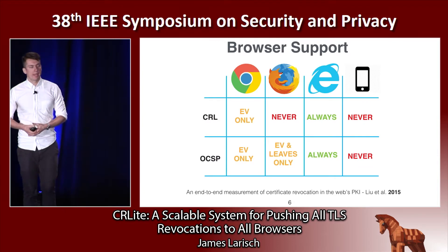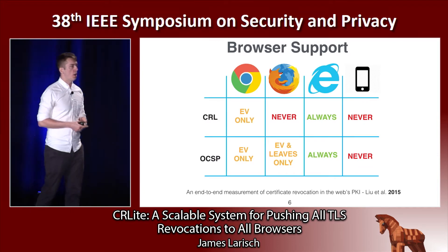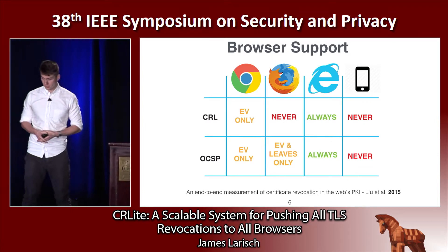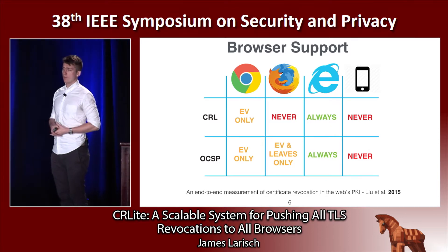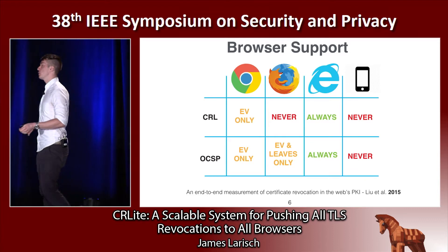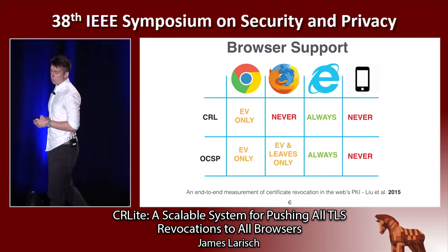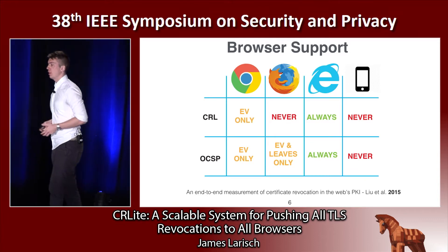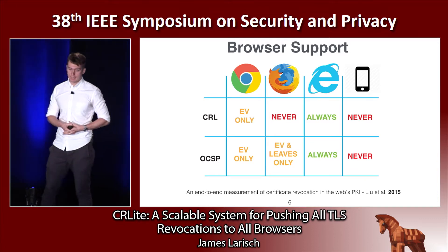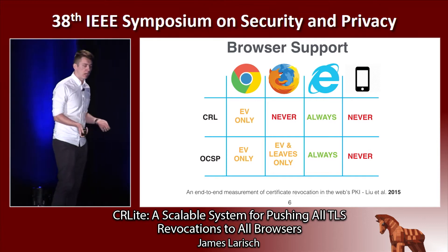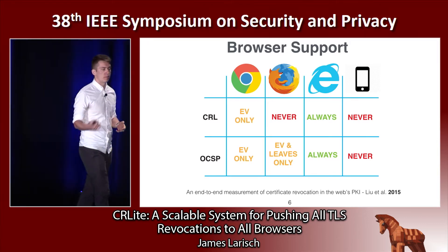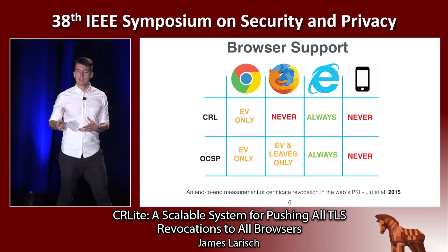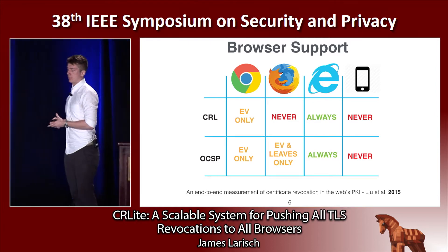The current revocation mechanisms are unpopular and inferior. Browsers especially don't like these revocation mechanisms. As of 2015, Internet Explorer was the only browser to implement full CRL and OCSP checking. On the other hand, mobile browsers completely eschew revocation checking due to the latency and bandwidth performance penalties.